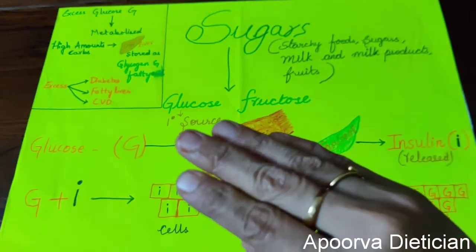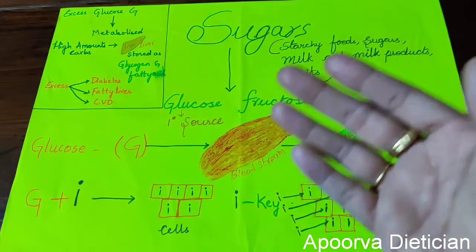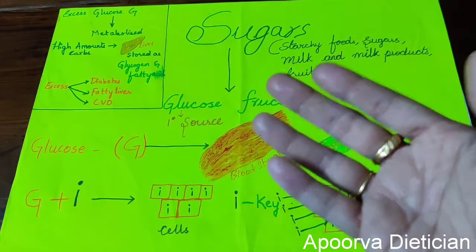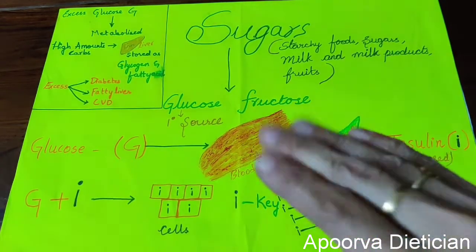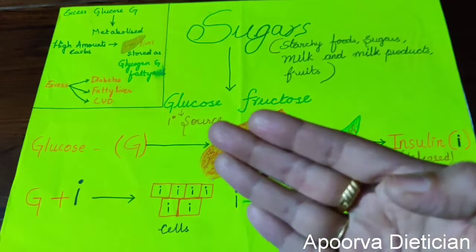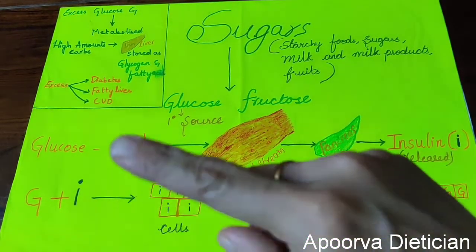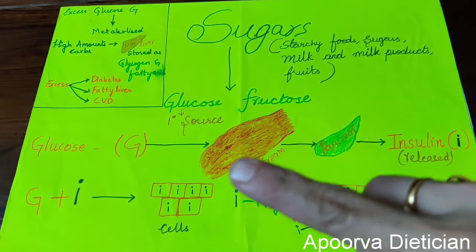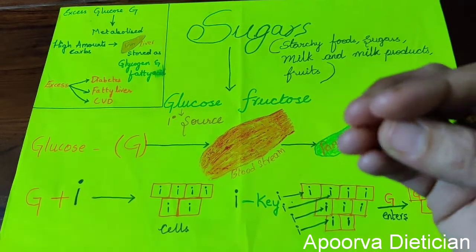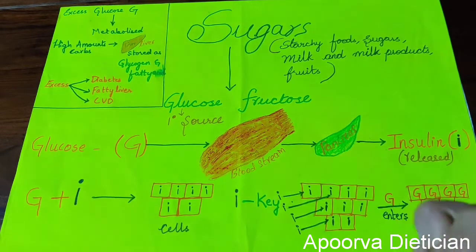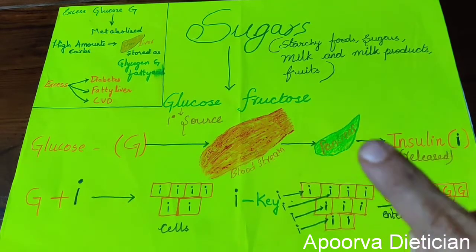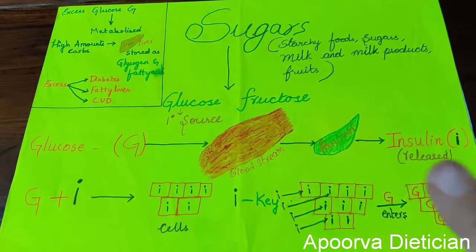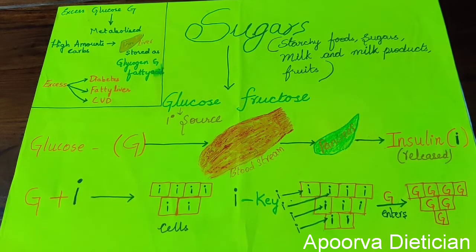Glucose is one form of sugar found in starchy foods, milk and milk products, and fruits. Glucose is the primary source of energy. When you eat food, glucose enters the bloodstream, and once it enters the bloodstream, the pancreas — shown here in green — releases insulin.